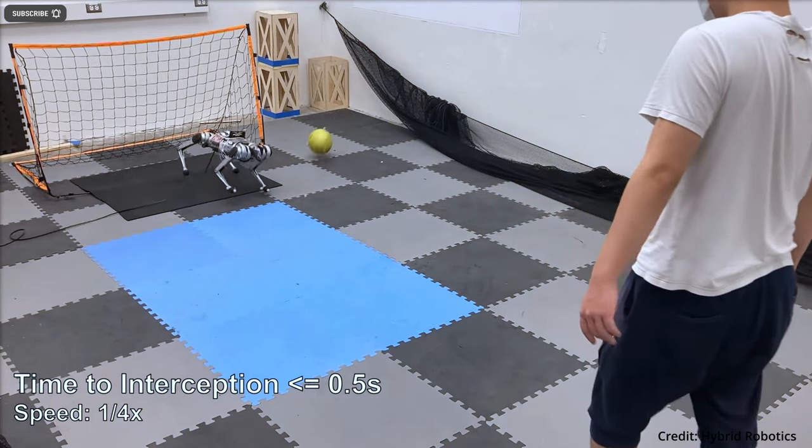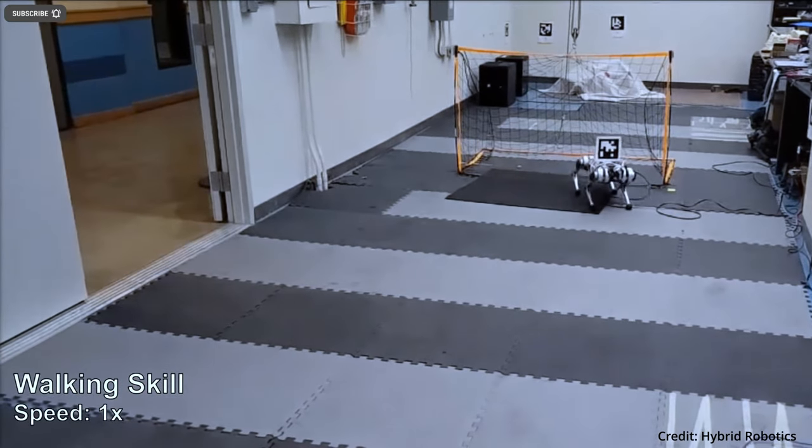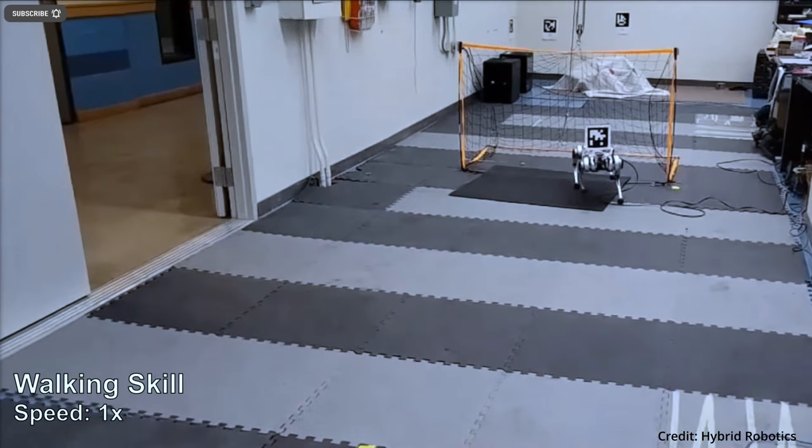According to MIT, the Mini Cheetah is the first robot dog that can do a reverse flip and trot across uneven terrain nearly twice the speed of a normal person's walk.